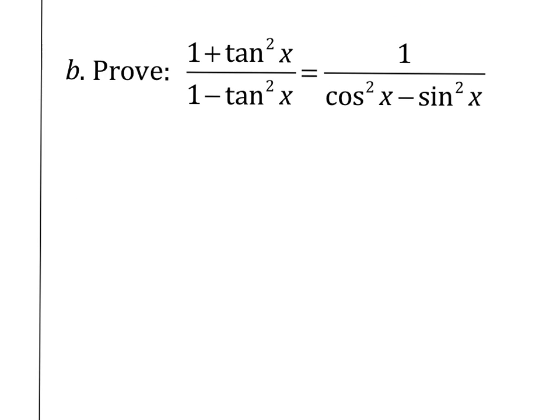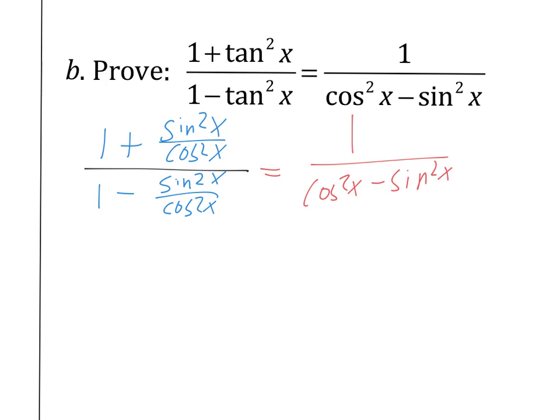Next up, we've got 1 plus tangent squared X is equal to 1 over cosine squared X minus sine squared X. I'm not really sure where to begin. I like converting things to sine and cosine first, so I might start with something like that. So we've got 1 plus tangent squared X. I could write this as 1 plus sine squared X over cosine squared X. And my denominator as 1 minus sine squared X over cosine squared X. Let's do some common denominators in the top and the bottom. One I could write as cosine squared X over cosine squared X.